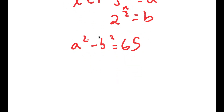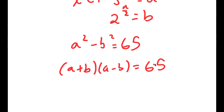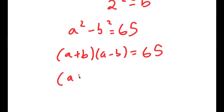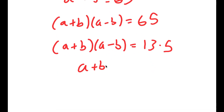And a squared minus b squared is the same thing as a plus b times a minus b. And 65 I can rewrite as 13 times 5. So I have a plus b times a minus b is equal to 13 times 5, meaning a plus b equals 13 and a minus b equals 5.